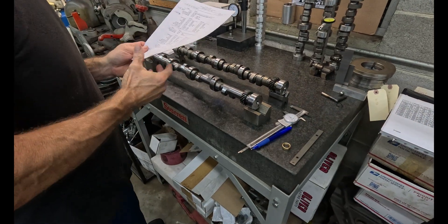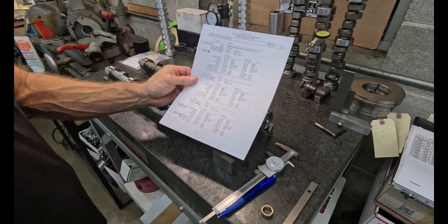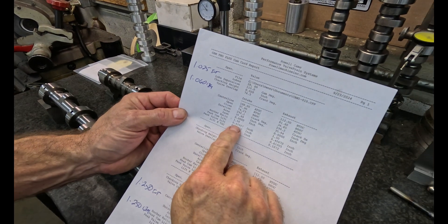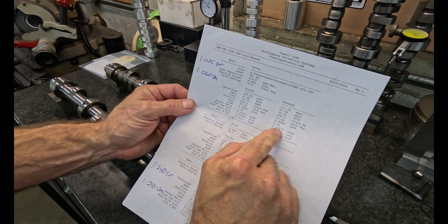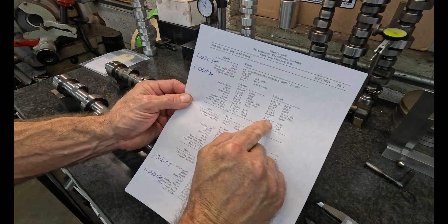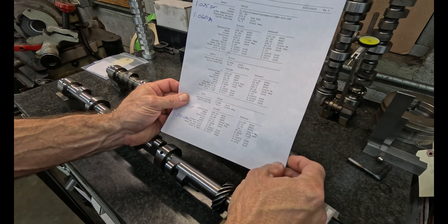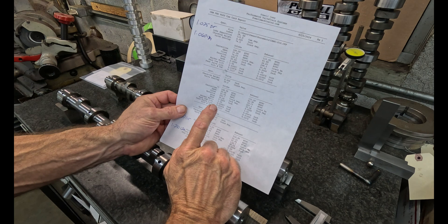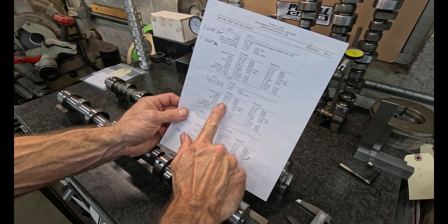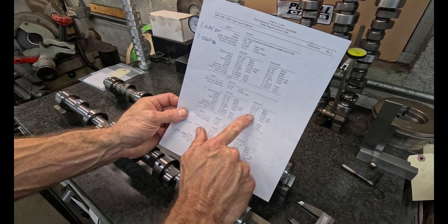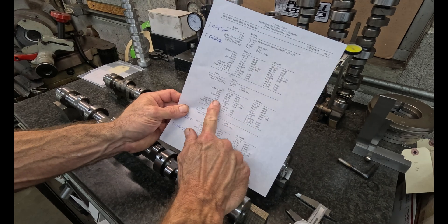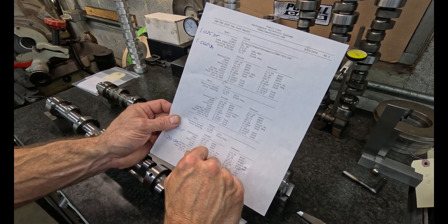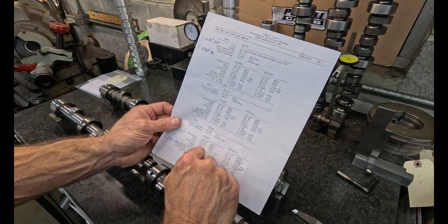So I just ran it on the cam doctor to verify. So if we look, it's 426 lobe lift on the intake and 406 on the exhaust, and it's 255 on the intake duration and 263 on the exhaust. So the duration's in the window, but the problem is the lobe lift is just extremely too big.